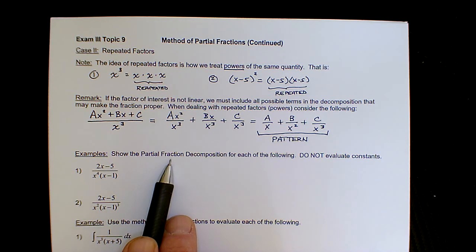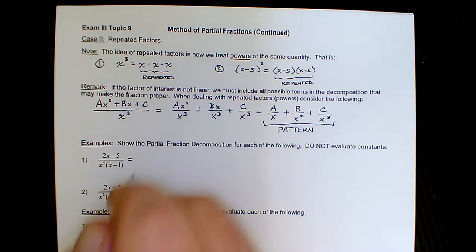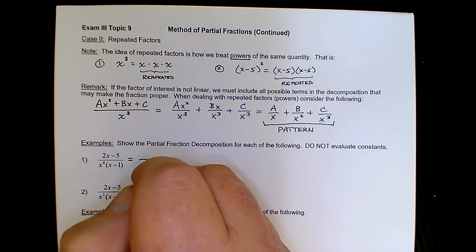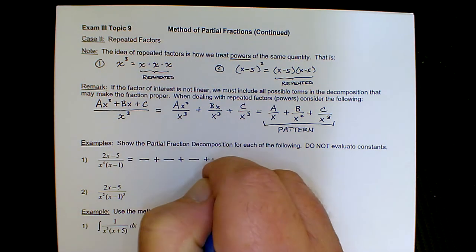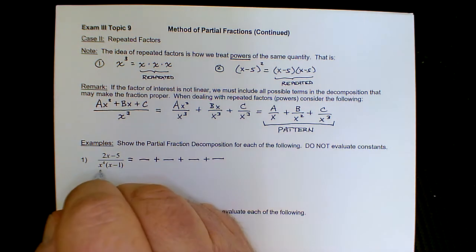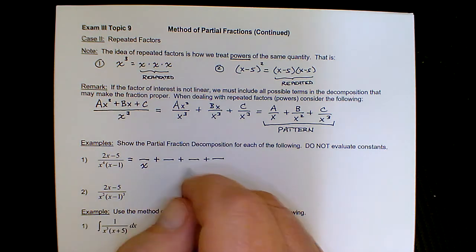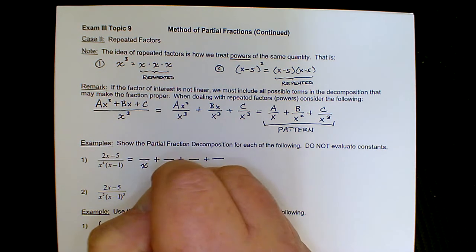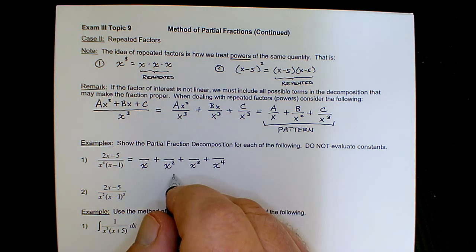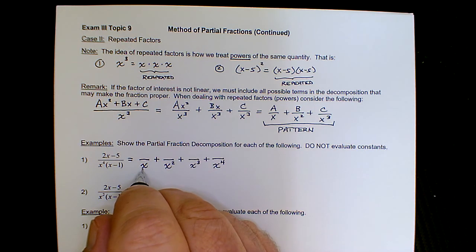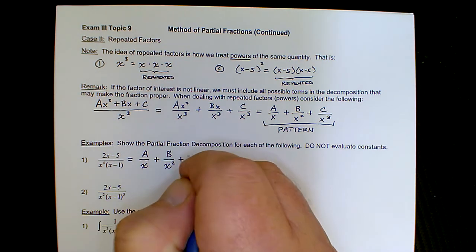Let's reinforce that with examples — show the partial fraction decomposition but do not evaluate the constants. For x to the fourth: it's a repeated factor, fourth power means four fractions. The unique factor is x, so the denominators are x, x squared, x cubed, and x to the fourth. Since x is linear, we place constant terms a, b, c, d above each fraction respectively.